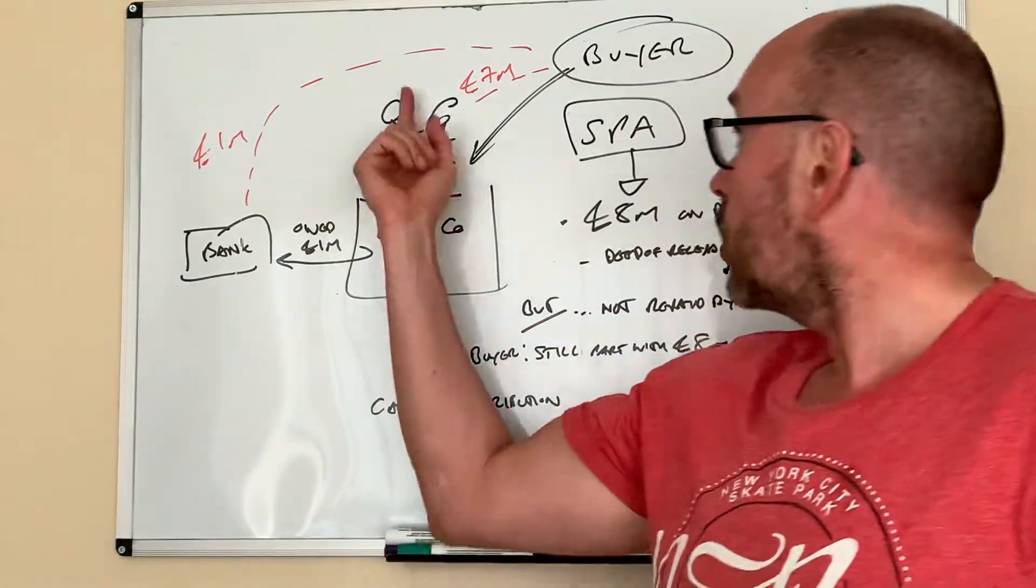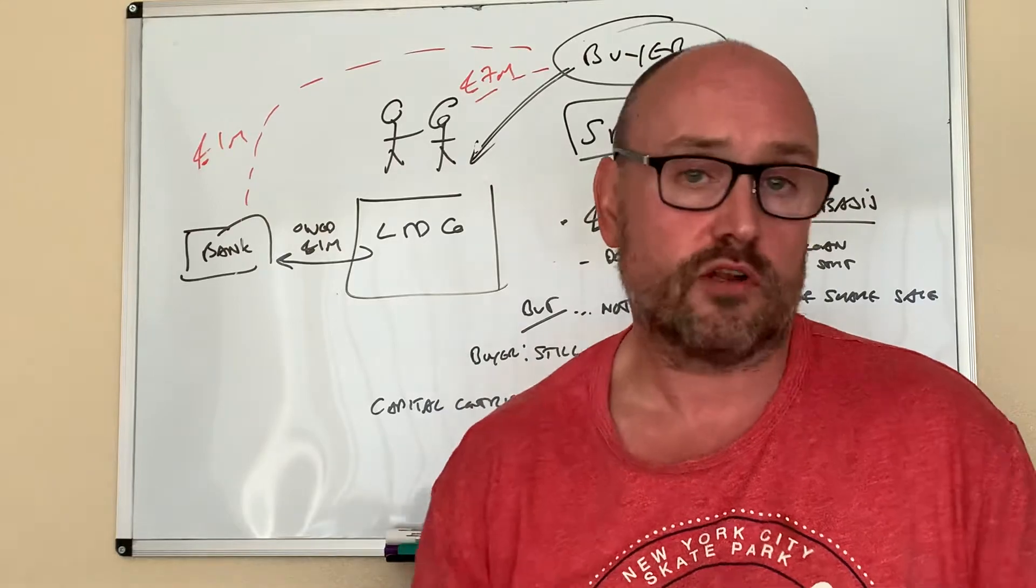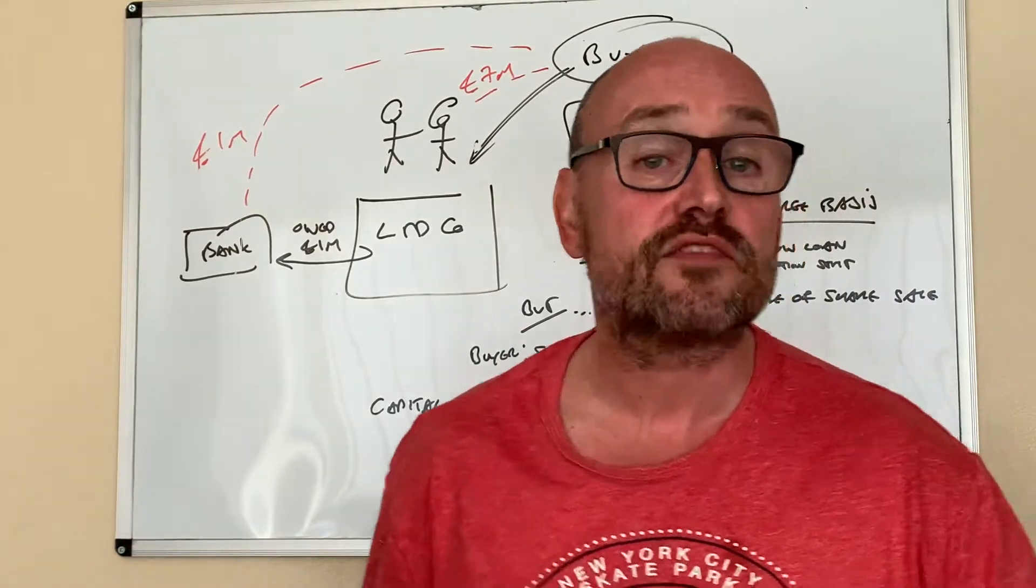So they said, well, look, we received seven million, seven million is the gain. So three and a half million each on their respective tax returns.